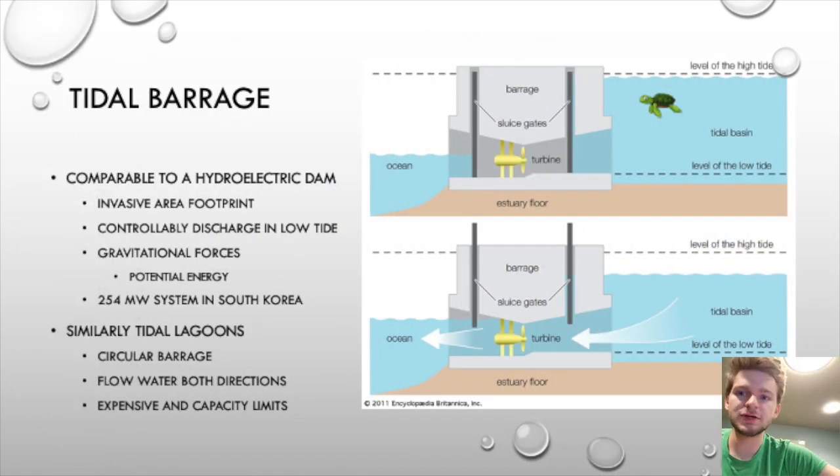We're now going to transition into a different area. We're going to look specifically at tidal systems, which utilize the gravitational patterns of the world and of the earth based upon the sun's gravity and the moon's gravity, which influence tides. There's high and low tides, for example. We'll start with the tidal barrage system, which is very comparable to a hydroelectric dam.